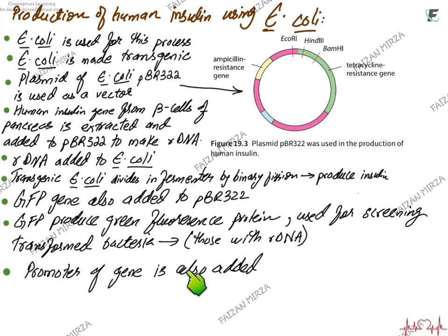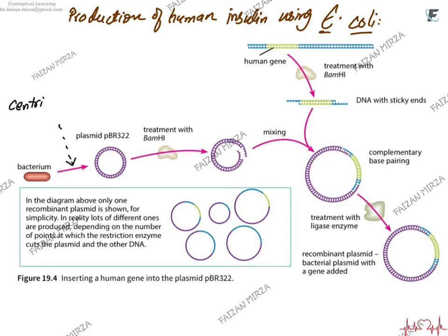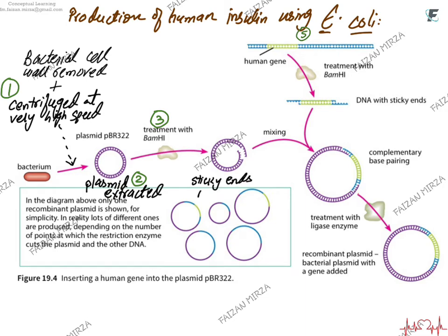Bacteria that were not transformed — that did not receive the recombinant DNA — can be separated from the transgenic ones. A promoter of the gene must also be added, since it is required for genetic technology; RNA polymerase and transcription factors attach here. For the production of insulin, you take the bacteria, treat them with enzymes to remove the cell wall, then centrifuge at very high speed to push out and extract the plasmid.